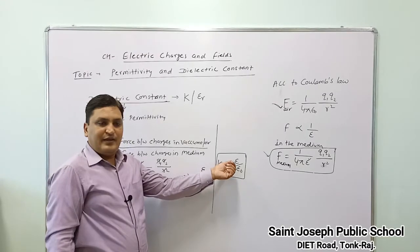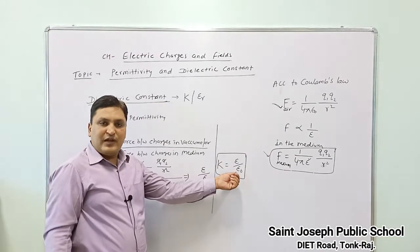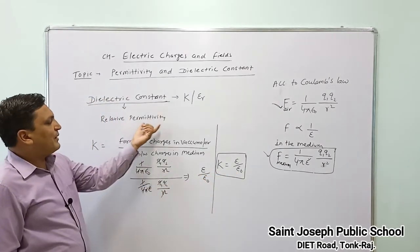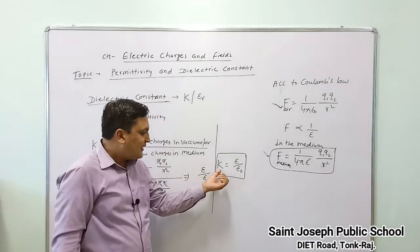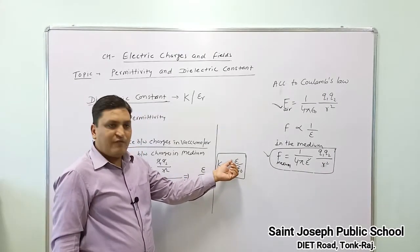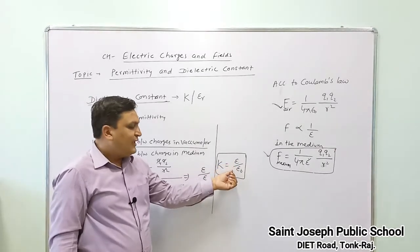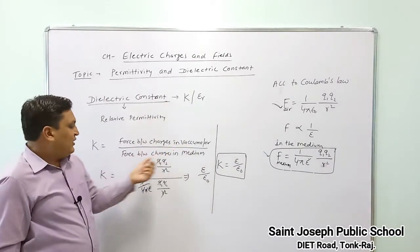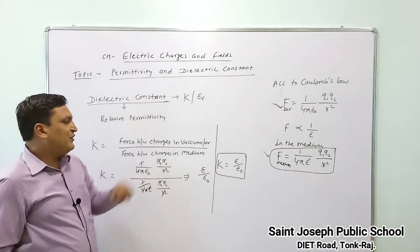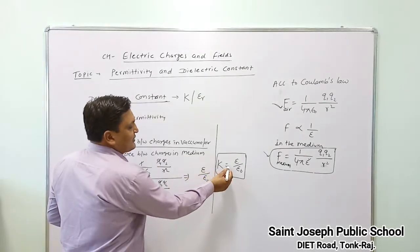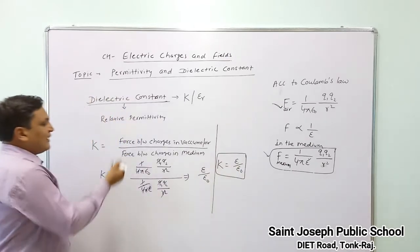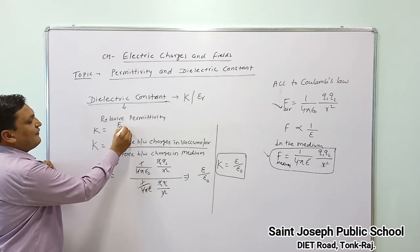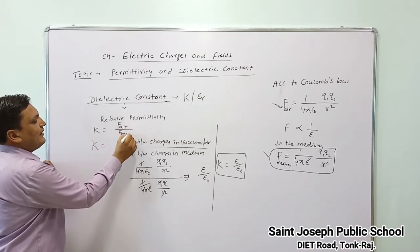So the dielectric constant K equals epsilon upon epsilon naught — meaning dielectric constant is the value of permittivity in any medium with respect to the permittivity of vacuum. This is a relative quantity, that's why it is called relative permittivity. The dielectric constant is the ratio of permittivity of the medium to the permittivity of vacuum, and can also be written as K equals F in air upon F in any medium.